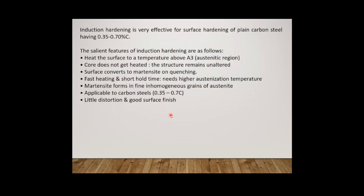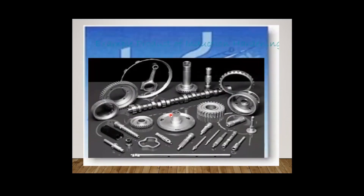So immediately heating and quenching are used for getting the case hardening. For heating, electrical coils are used; for cooling, water jet nozzles are used. The advantage of induction hardening is that it is very effective for surface hardening of plain carbon steel having 0.35 to 0.7 percent carbon. The salient features are: heat the surface to temperature above the austenitic region, the core does not get heated and the structure remains unaltered, fast heating and short cooling time, after which quenching is done by water jets. Case hardened materials include gears, spindles, camshafts, and different types of tools like drill bits and levers.